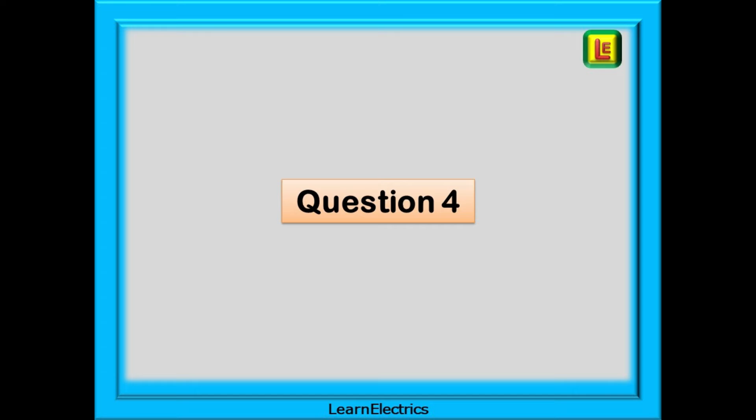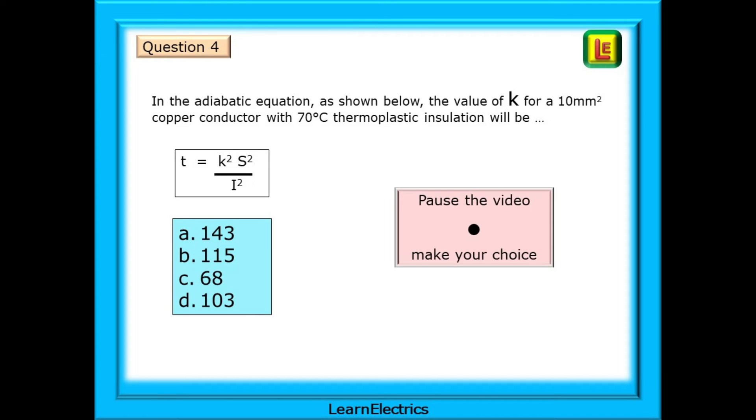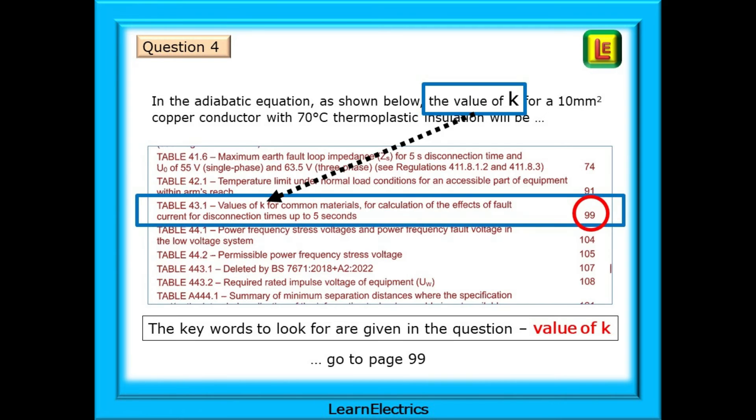Question four shows a calculation, but the question is not a calculation. Always read the question carefully. In the adiabatic equation, as shown below, the value of K for a 10 square millimetre copper conductor with 70 degree thermoplastic insulation will be what? The equation is shown only so that you know which K they are making reference to. You will need a table of K values to find the answer. Pause the video. Find the table.